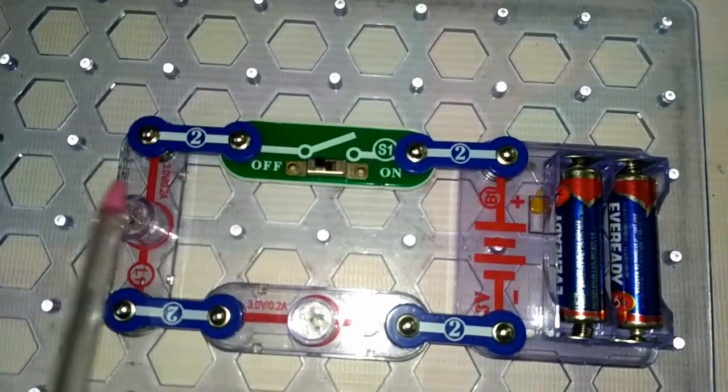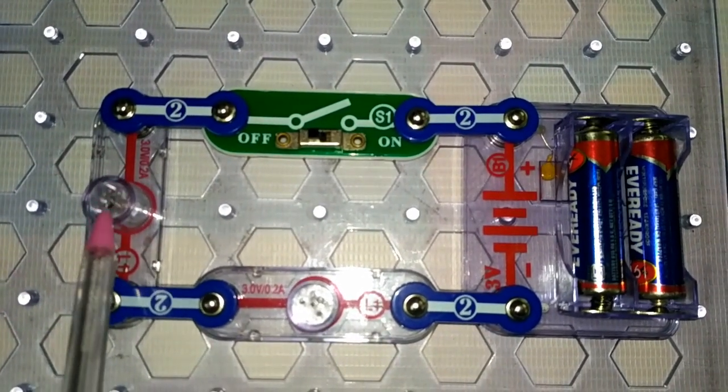And this is again a snap wire and this is called a lamp. It is about a three volt bulb. There is a symbol of lamp.